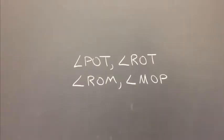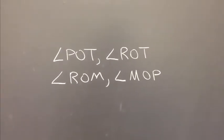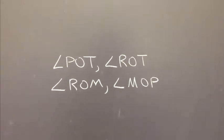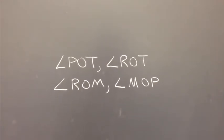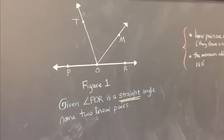From this diagram, the two linear pairs are angle POT and ROT, and the other linear pair is ROM and MOP. That is how you identify linear pairs.